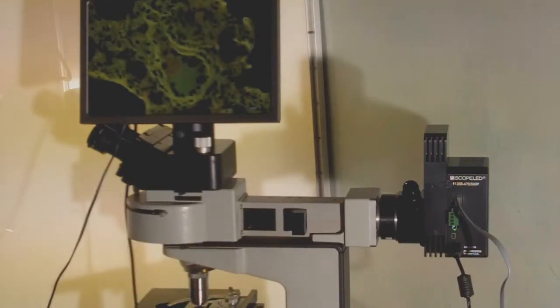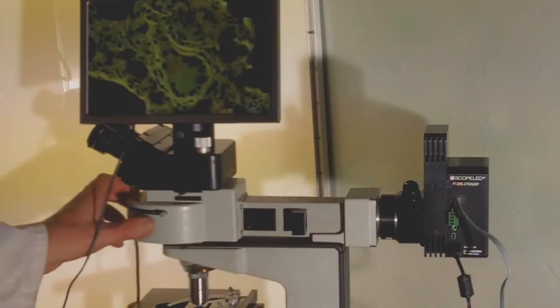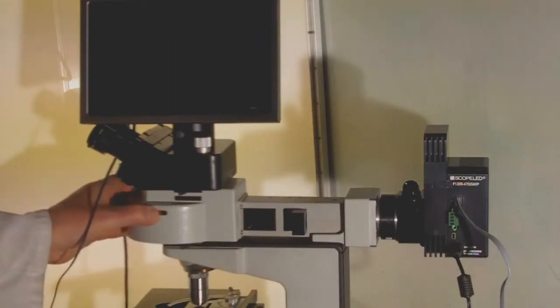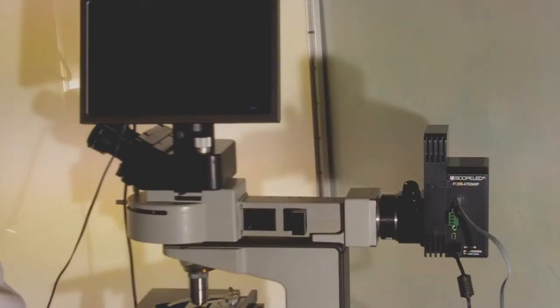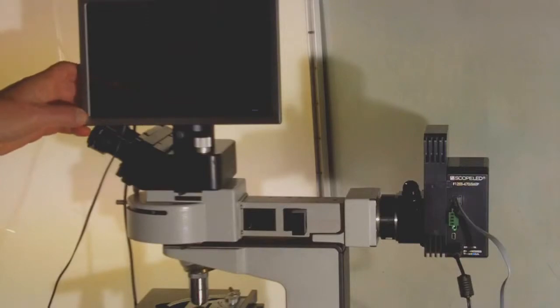This is just a standard 25x dry objective looking at some lung tissue that's been thin sectioned. To go to the secondary wavelength, the green light excitation, we can quickly switch.